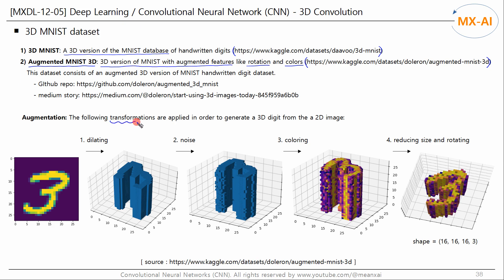The following transformations are applied in order to generate a 3D digit from a 2D image. This example shows a three-dimensional image of the digit 3. The first step is dilating. In this step, the original image is stacked 28 times to create a 3D grid. In the second step, Gaussian noise is added to non-zero values in each layer of the stack. In the third step, colors are added to the 3D data using some random Python color map. The final step is reducing size and rotating. In this step, each image will be resized to 16 by 16 by 16 and rotated X, Y, Z axes by random small angles.